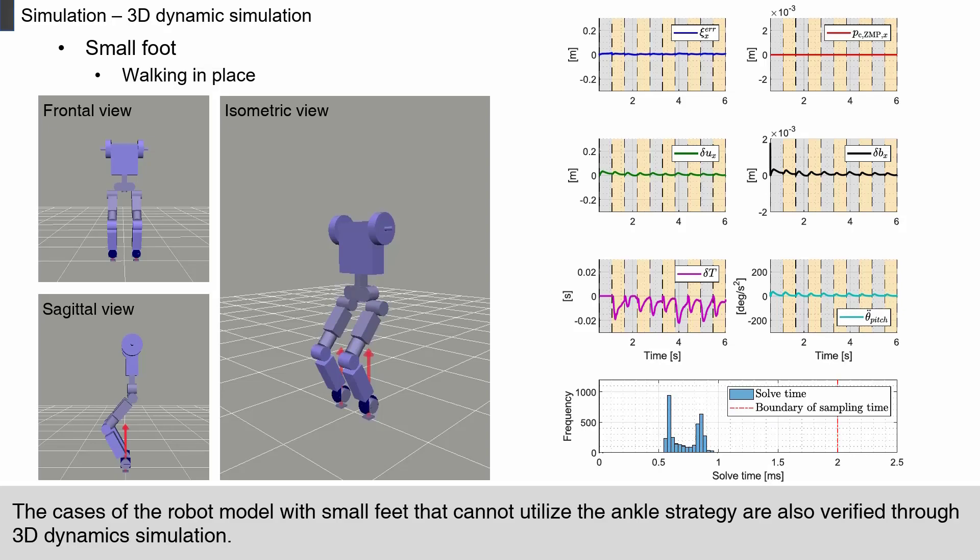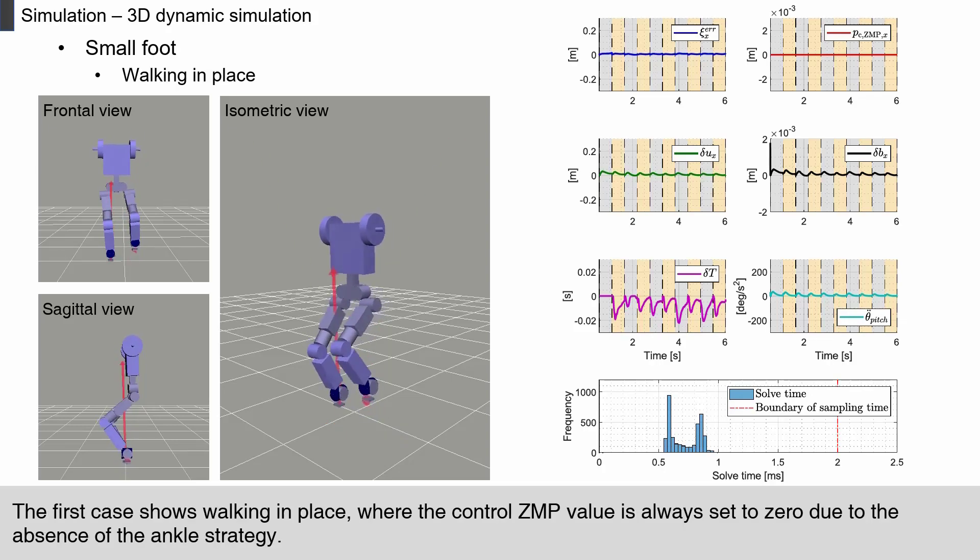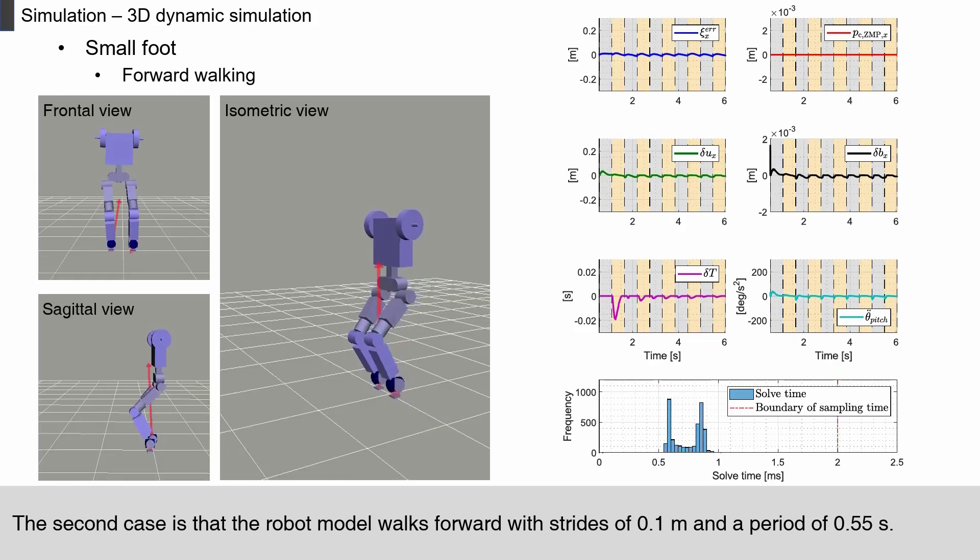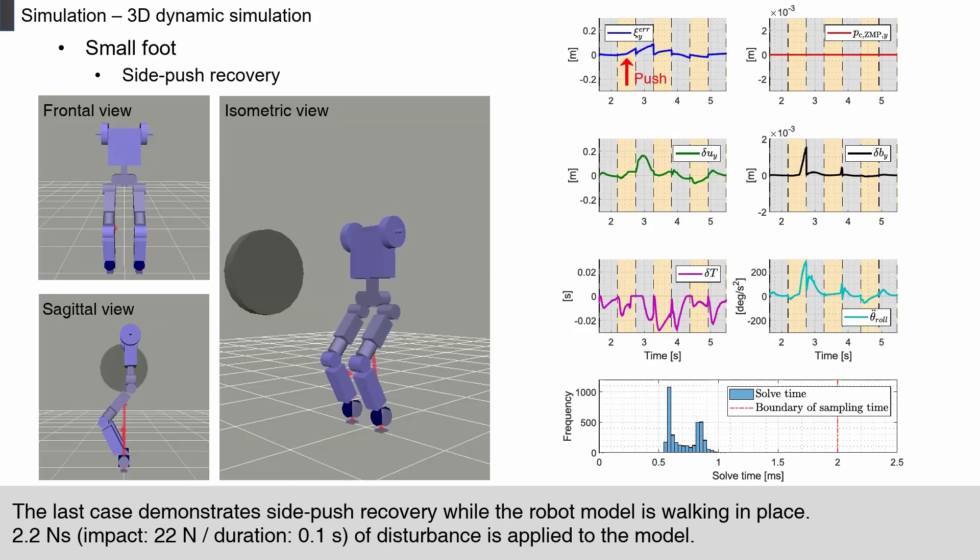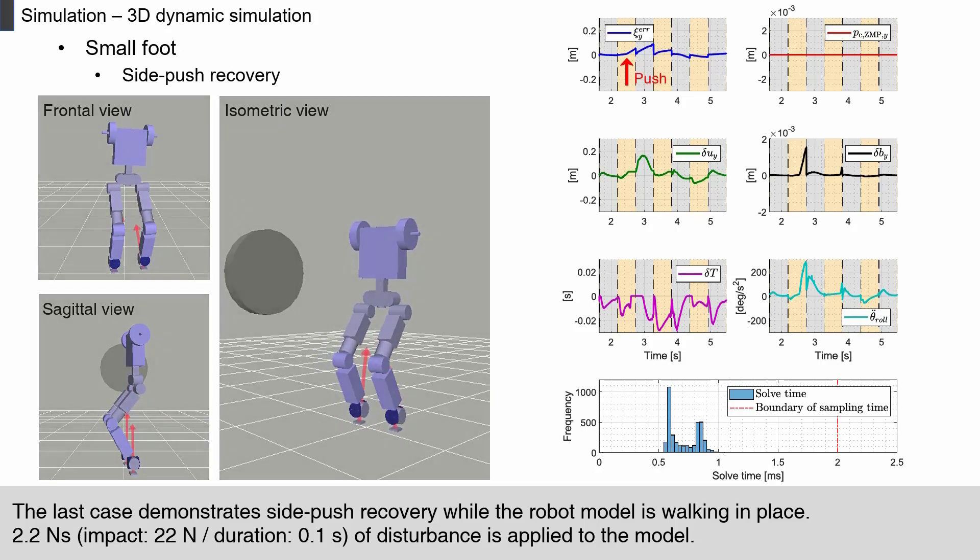The cases of the robot model with small feet that cannot utilize the ankle strategy are also verified through 3D dynamic simulation. Choreonoid is used as the simulator, and the robot model has relatively smaller feet compared to the original flat feet. The first case shows walking in place, where the control ZMP value is always set to zero due to the absence of the ankle strategy. The second case is that the robot model walks forward with strides of 0.1 m and a period of 0.55 second. The last case demonstrates side push recovery while the robot model is walking in place. 2.2 Nm second of disturbance is applied to the model.